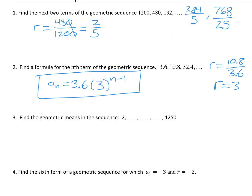Now we're finding some geometric means. We're starting with 2, and because it's geometric, we multiply by r, then by r again. To get from 2 to 1250, that is 4 jumps, which means we multiplied by r four times. So that means r to the fourth. We started with 2 and multiplied it by r four times, so 2 times r to the fourth equals 1250. Therefore r to the fourth equals 1250 over 2, so r to the fourth equals 625.